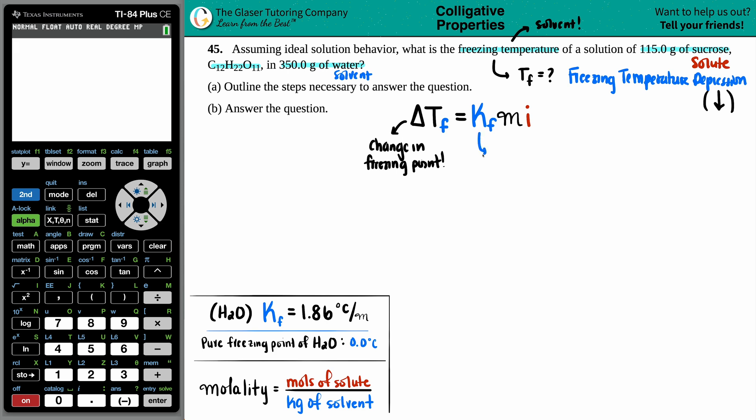And the KF value is basically the freezing point depression constant. And this number is solely reliant on your solvent. Now I went in the back of the textbook to find out what the KF value is for the H2O, which is the solvent. So we know that this is 1.86 degrees Celsius per molality. Okay, so we know this number. Now, M stands for molality. They did not give us a molality. So that's probably something we have to find out. And the I value is called a van't Hoff factor.